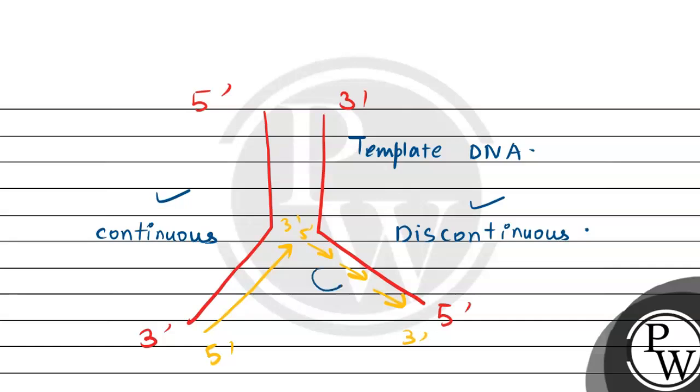These fragments become what is known as Okazaki fragments. Each of them requires an RNA primer.